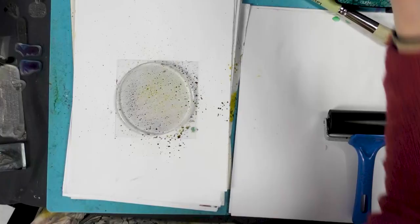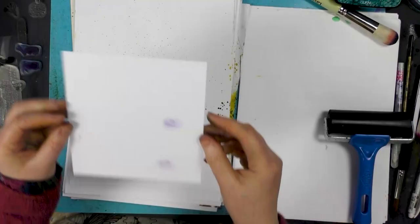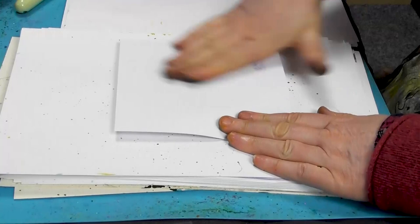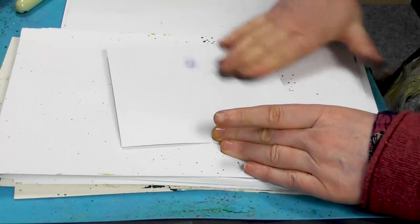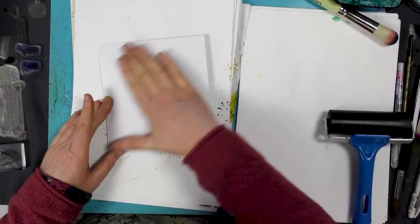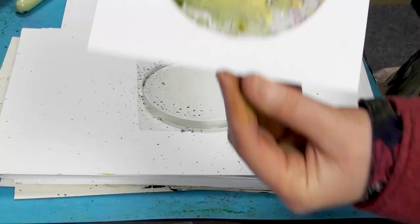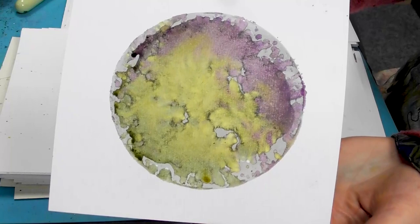We've got our white multifarious card here, and I'm going to pop that over the top and smooth it over. There's your background. You can see by just using three colors, you get that lovely organic effect.